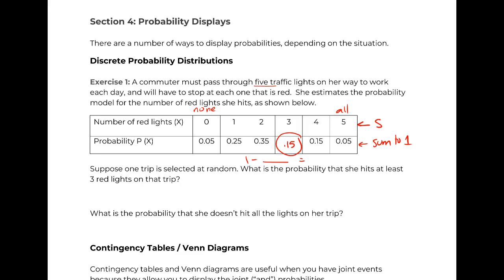So in addition to creating one of these or filling in a missing value or checking to see if one's legitimate, another thing we can do is answer questions about probabilities based on this table. So in this case, suppose we're going to select one trip. What is the probability that she hits at least 3 red lights? So if we wanted to actually use probability notation for this, we would have to maybe define some event, like event A is hitting at least 3. And so we have to go A is that she hits. Well, at least 3 means 3, 4, or 5.